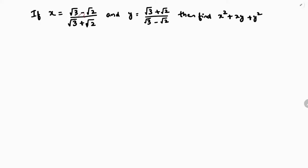If x equals (√3 minus √2) by (√3 plus √2) and y equals (√3 plus √2) by (√3 minus √2), then find x square plus xy plus y square.